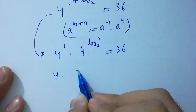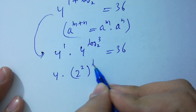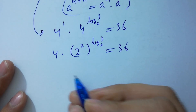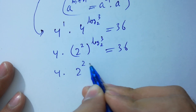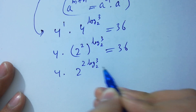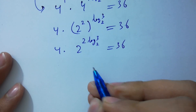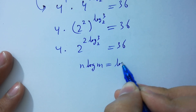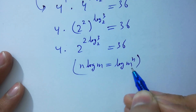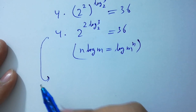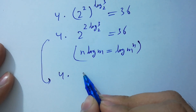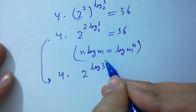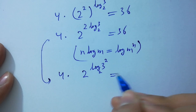4 as it is. 4 is 2 squared, so 2 squared to the power log 3 to the base 2 equals 36. That gives 4 times 2 to the power 2 log 3 to the base 2 equals 36. As n log m equals log m to the power n, we have 2 to the power log 3 squared to the base 2 equals 36.